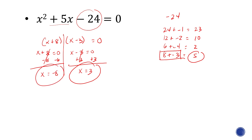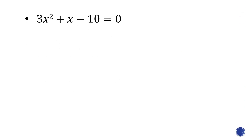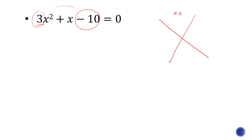Last example. In this one, a is not equal to 1 — we have a = 3. We will not apply the same procedure as the previous example because the numerical coefficient a is not equal to 1. The method we'll be using here is what we call the X method. In the X method, the number on top is the product of a and c. So a times c: multiply 3 and negative 10, that's negative 30. The number in the middle is just b, the numerical coefficient of x, which is 1.